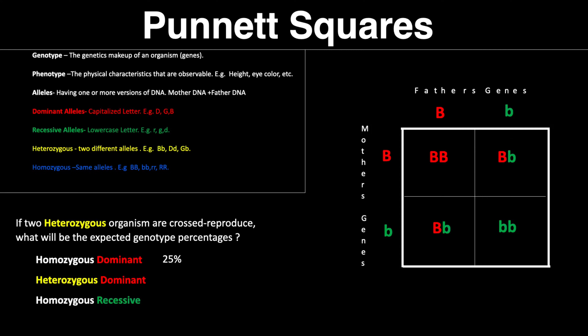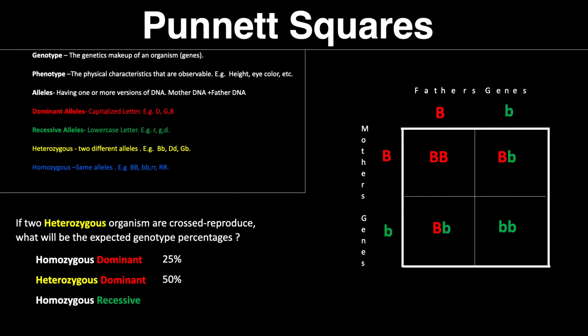Now we have heterozygous dominant — these are two different alleles, a capital letter and a lowercase letter. The capital B is dominant and will always lead. We have two of those, so 25 plus 25 gives us 50%. Now we have homozygous recessive — same alleles, but lowercase letters. We only have one of those, the double lowercase b, which comes in at 25%. This is how we find our genotype percentages.